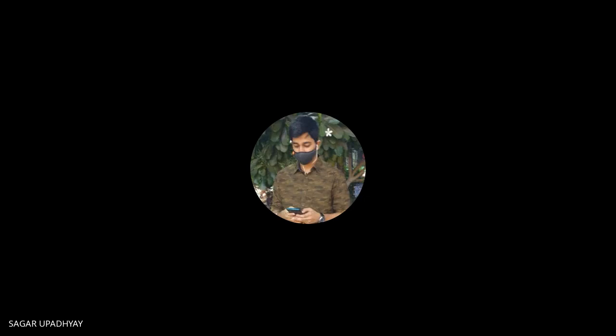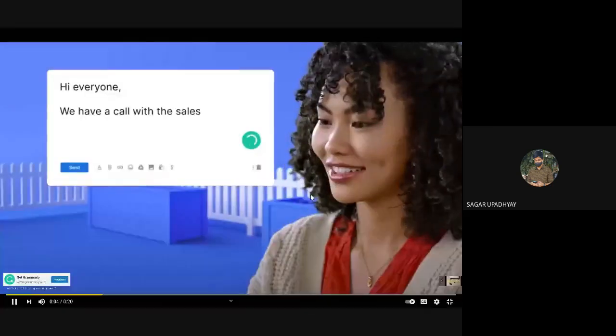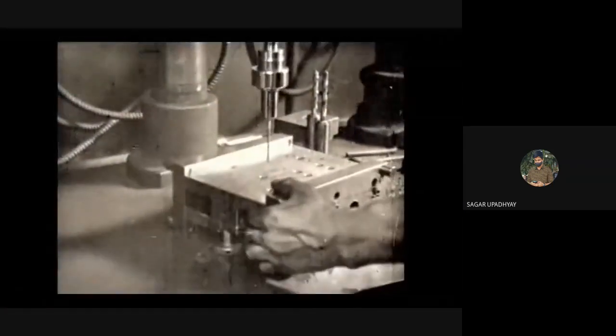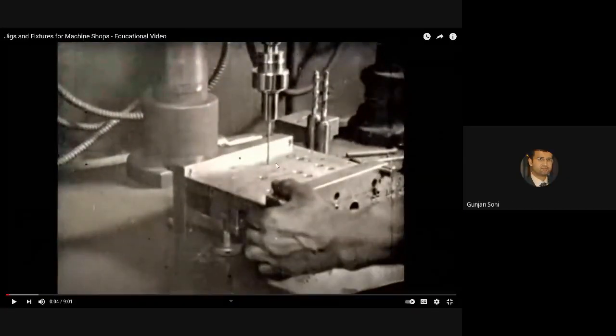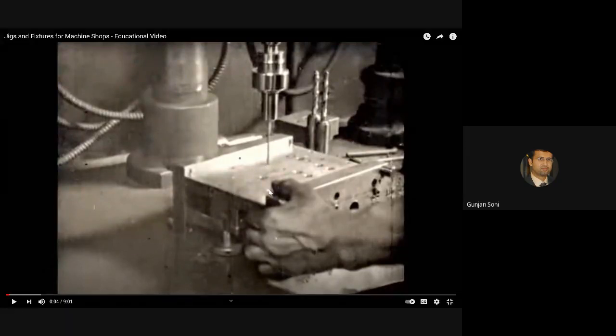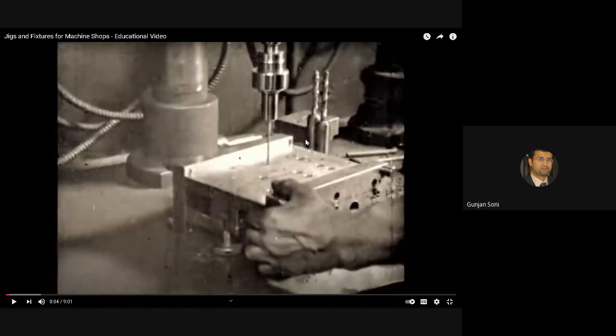Jigs and fixtures are used to hold parts. Jig will help in locating and guiding the tool that works on them. So this is a drilling tool which is working on a work piece. The holes will help you in locating.